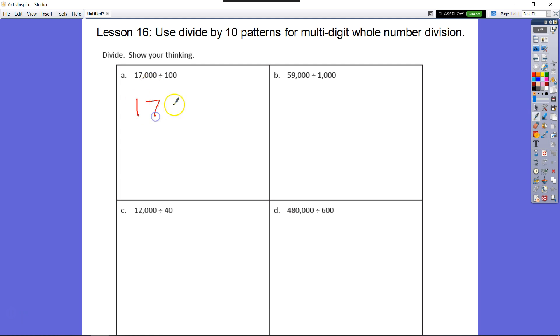We know that if we had 17,000 on our place value chart, and we're dividing by two zeros, everything's just going to move over two places. So my one's going to be here. Divide by 100, it's two place value unit jumps.